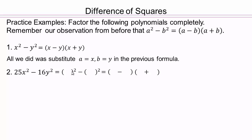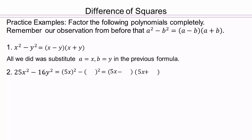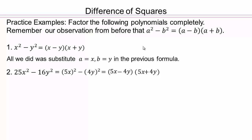Whose square gives you 25? That would be 5. Whose square gives you x squared? That'll be x. So what goes in here is 5x. Then for 16: whose square is 16? That would be 4. So 4y goes there, because 4 squared is 16 and y squared is y squared. So the a is now 5x and the b is now 4y — it's really just a substitution. Go ahead and do the next one on your own.